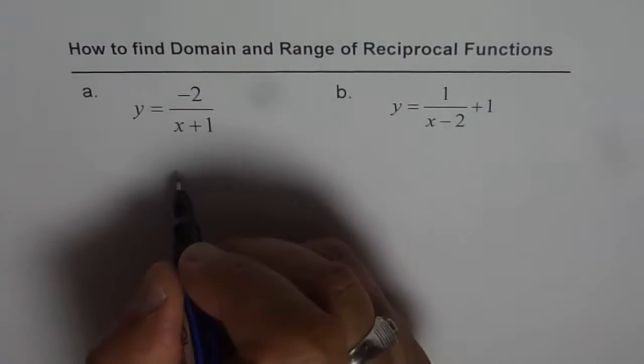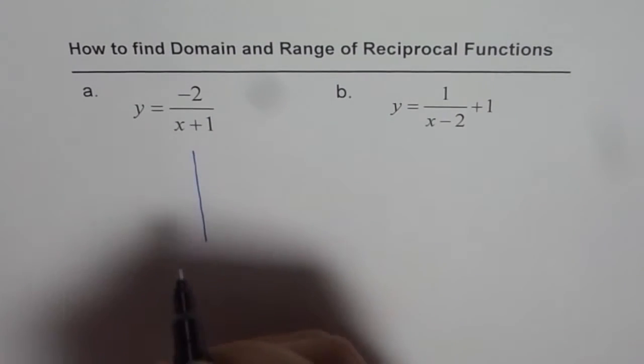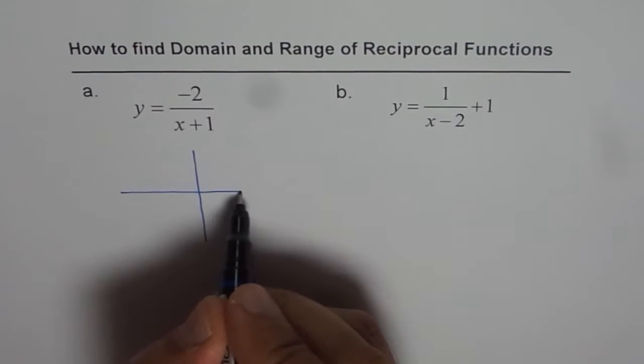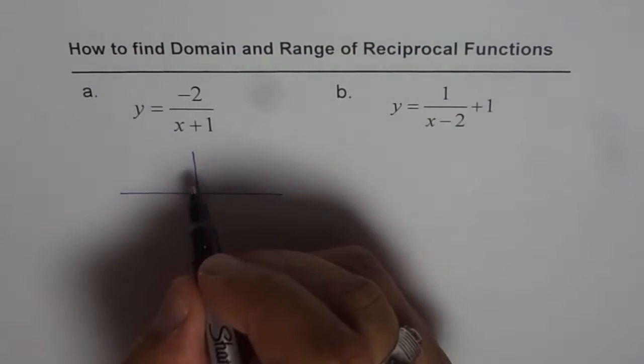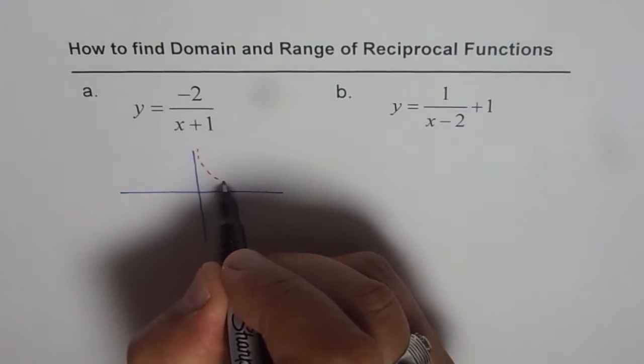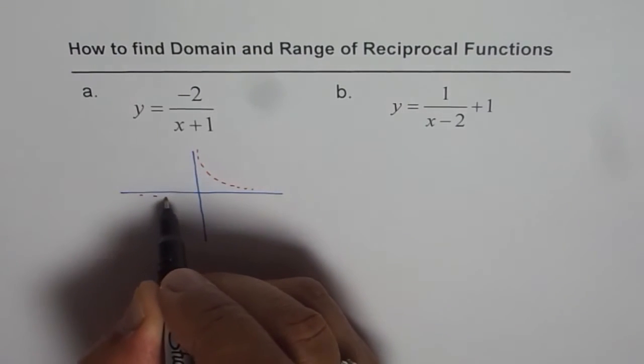We will find domain and range for these functions using transformation. So let us try to sketch the function. You know the function 1 over x is kind of like this. That is 1 over x.